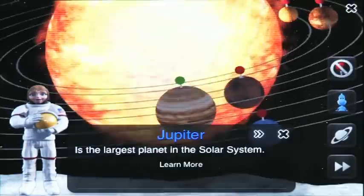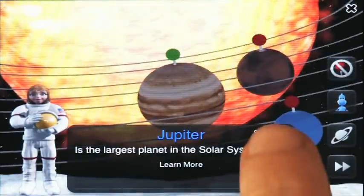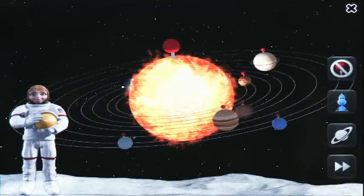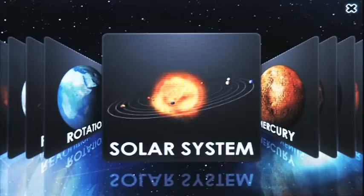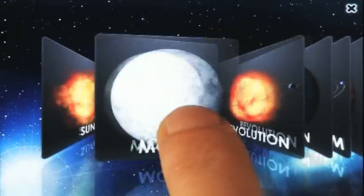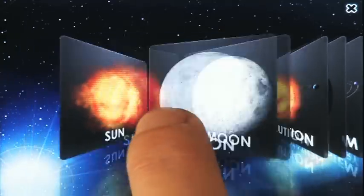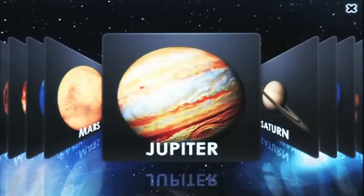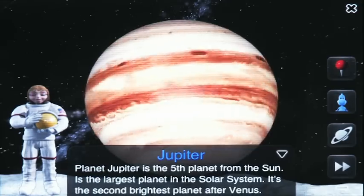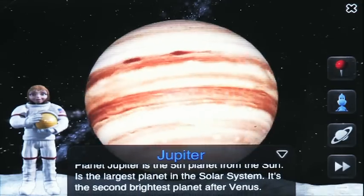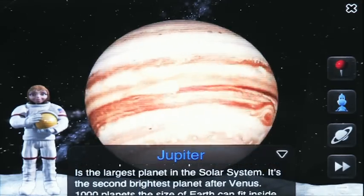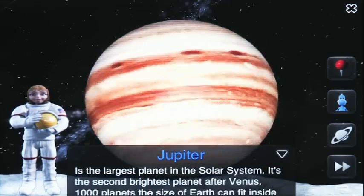You can also scroll through all the heavenly bodies and learn details about each one. Planet Jupiter is the fifth planet from the sun. It is the largest planet in the solar system.